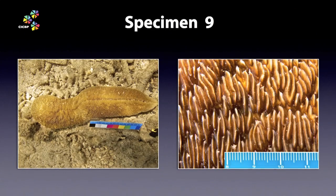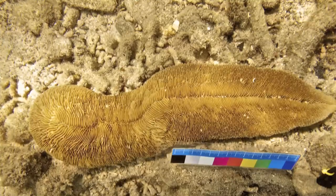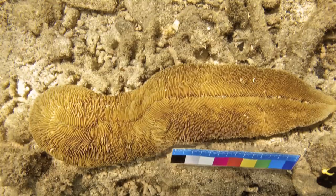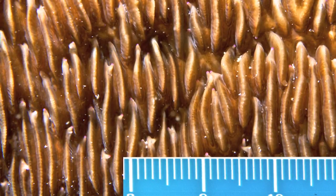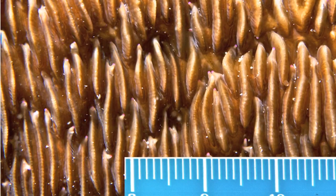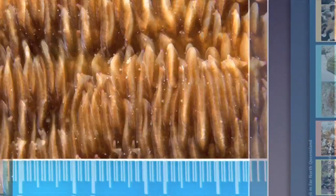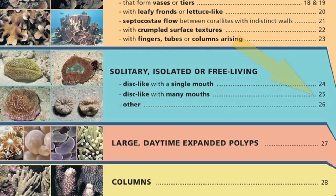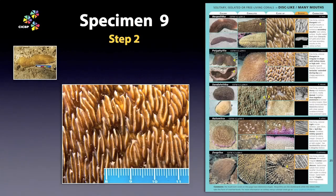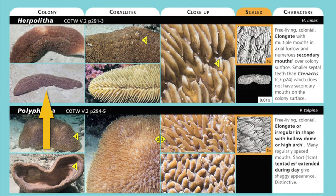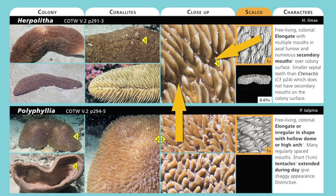Specimen 9 is another clearly free-living genus. Try not to pick up corals or handle them — they have enough problems. With a little experience, you can easily see if a coral is free-living or not. The close-up texture is a giveaway for the many-mouths look, sending us to lookalike page 25. Herpolitha, with its elongate colony, long axial furrow, and numerous secondary mouths on the colony surface, is another easy coral genus to learn. Note that the elongate disc-like colonies can have both blunt or pointed ends.